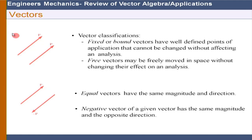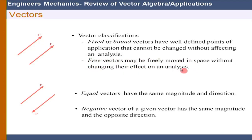Vectors are classified into two groups: fixed or bound vectors, where we cannot change the point of application without affecting the analysis, and free vectors, which can be freely moved in space without changing their effect on an analysis. We will see later on that a couple is going to be a free vector.